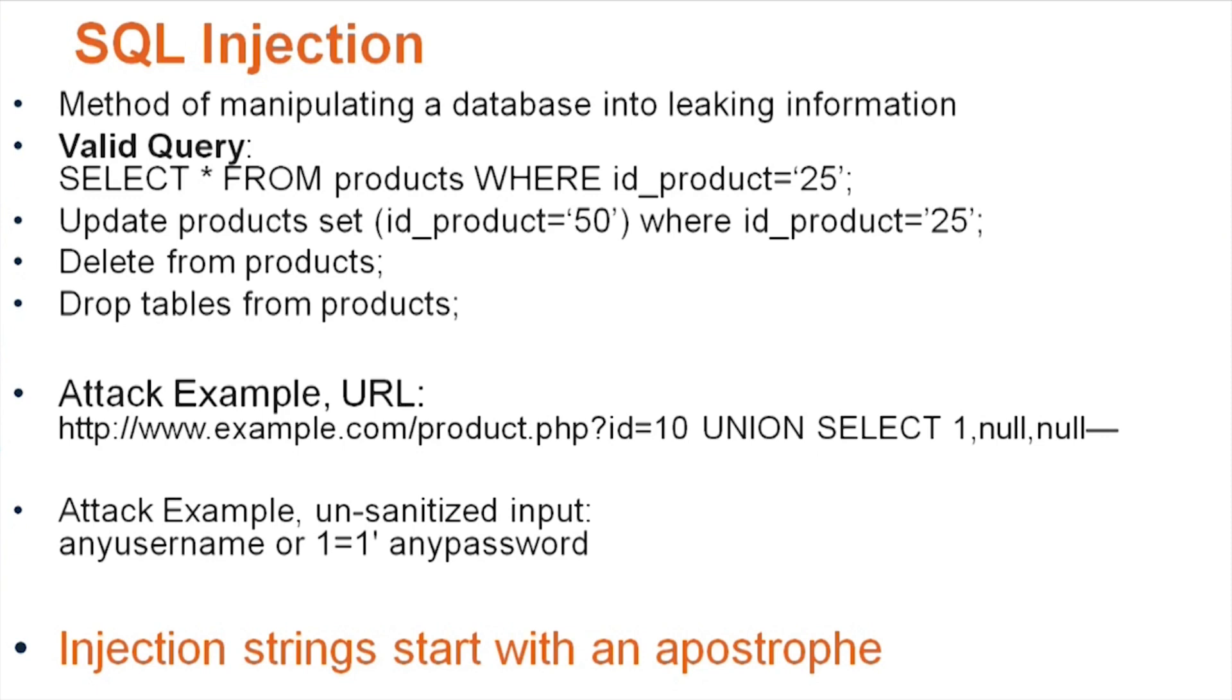So let's say how these work and where input sanitizing comes in. Remember, we talked about the number one way attackers attack a system is through the inputs and not sanitizing those inputs. So let's say you select star from products where ID product equals 25.